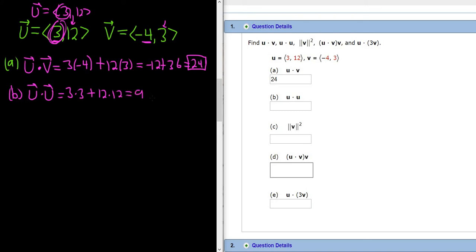So 3 times 3 plus 12 times 12. So that gives us 9 plus 144. 9 plus 144 is 153. So that will be the dot product of u with itself.